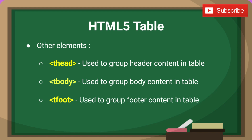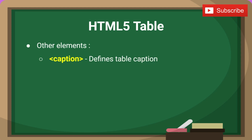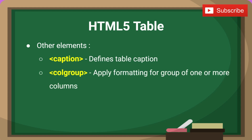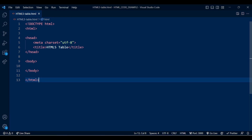If you want to add a heading or apply formatting to the table, you can use additional elements. caption defines the table caption. colgroup applies formatting for a group of one or more columns. col is used with the colgroup element and specifies column properties for each column.